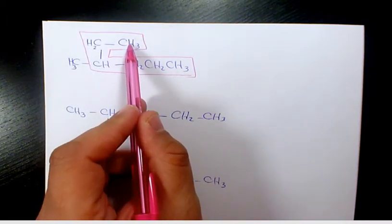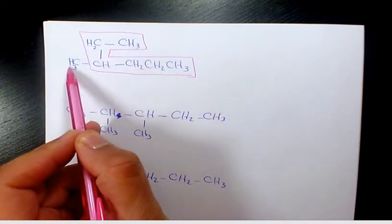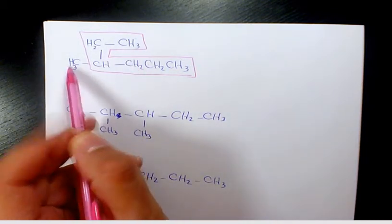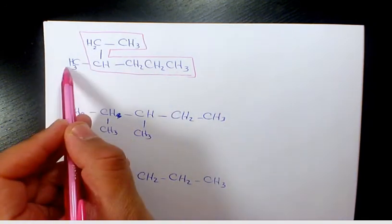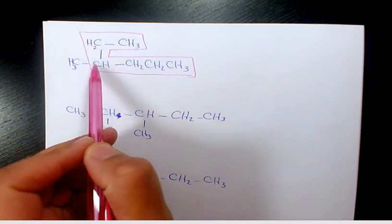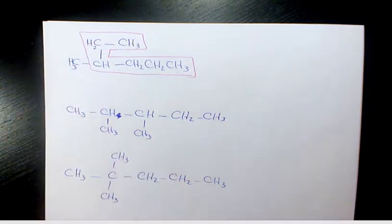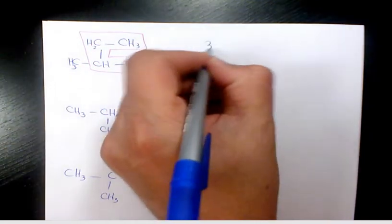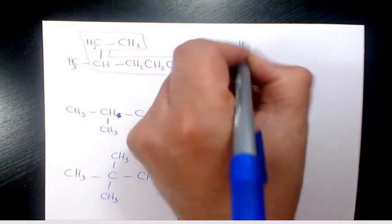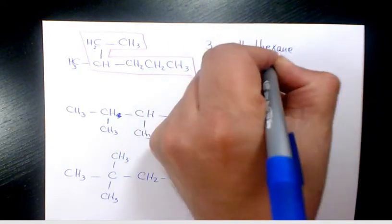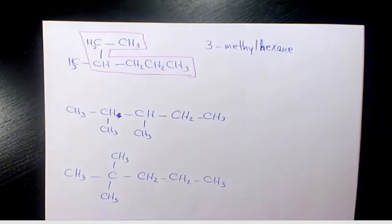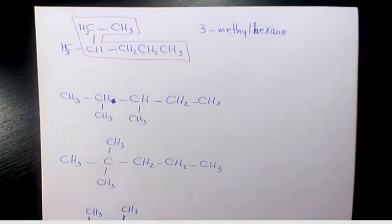Because when we select this side, the methyl group is going to take a smaller number. Because when we have one, two, three, four, methyl is going to be four. When you do it from this side, one, two, three, methyl gets number three. So it's going to be 3-methylhexane. That's the name of this. We're going to come up next one.